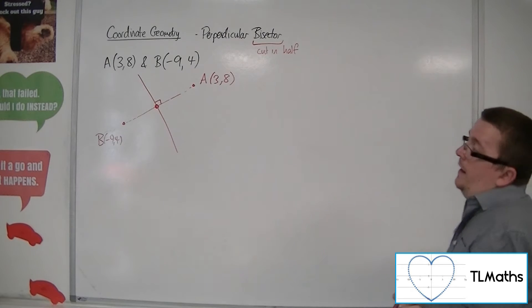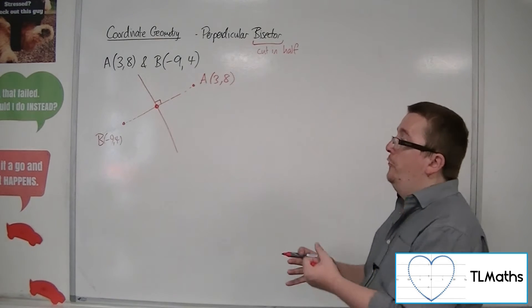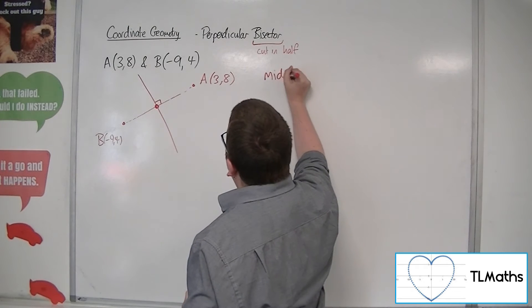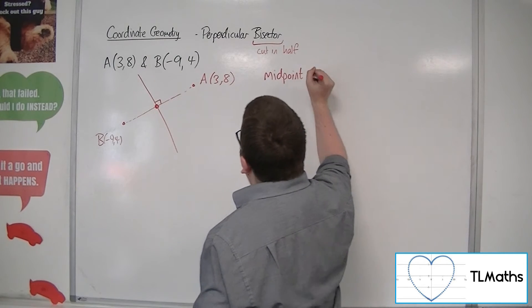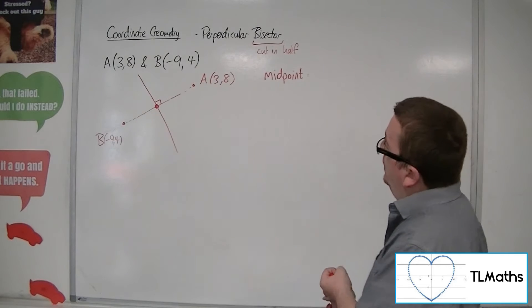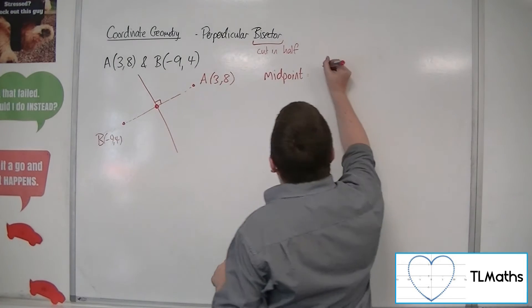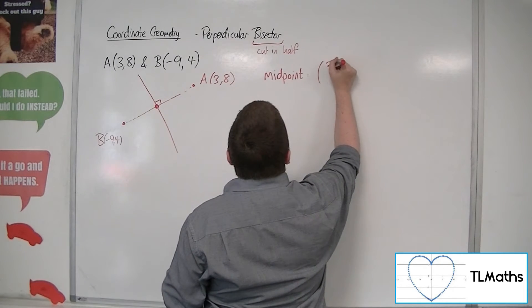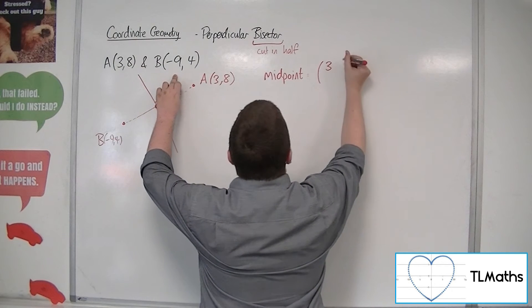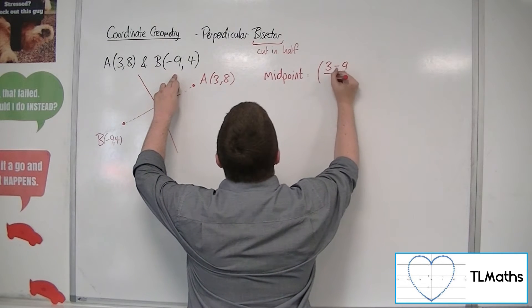So what I'm going to need in order to do that is, first of all, I'm going to need the midpoint. So if we work that out first, we add together the two x-coordinates. So 3 plus minus 9, or 3 take away 9, over 2.